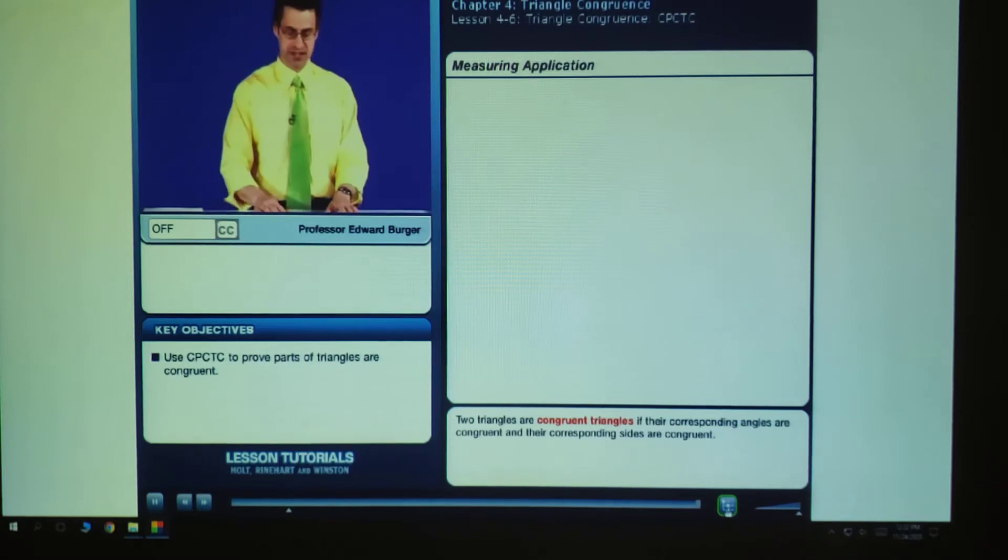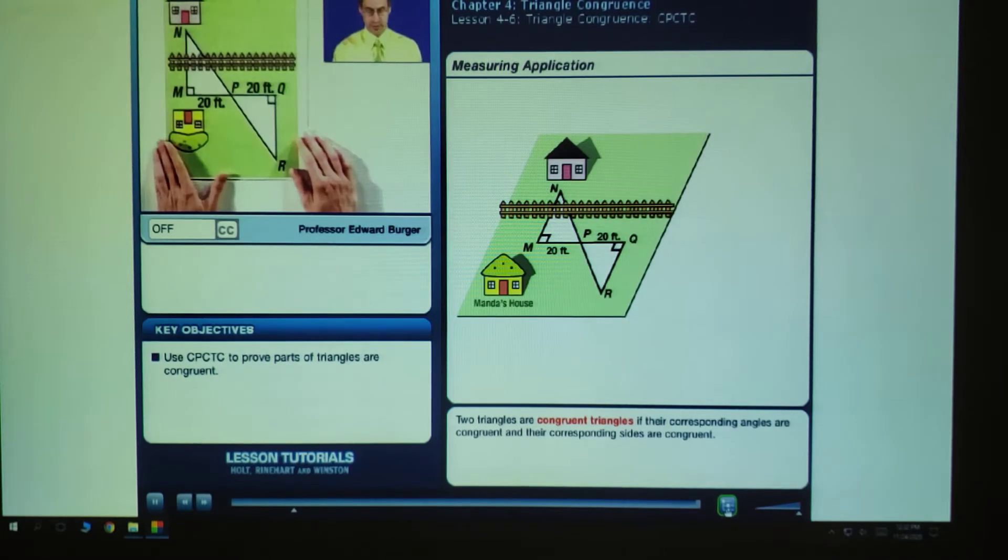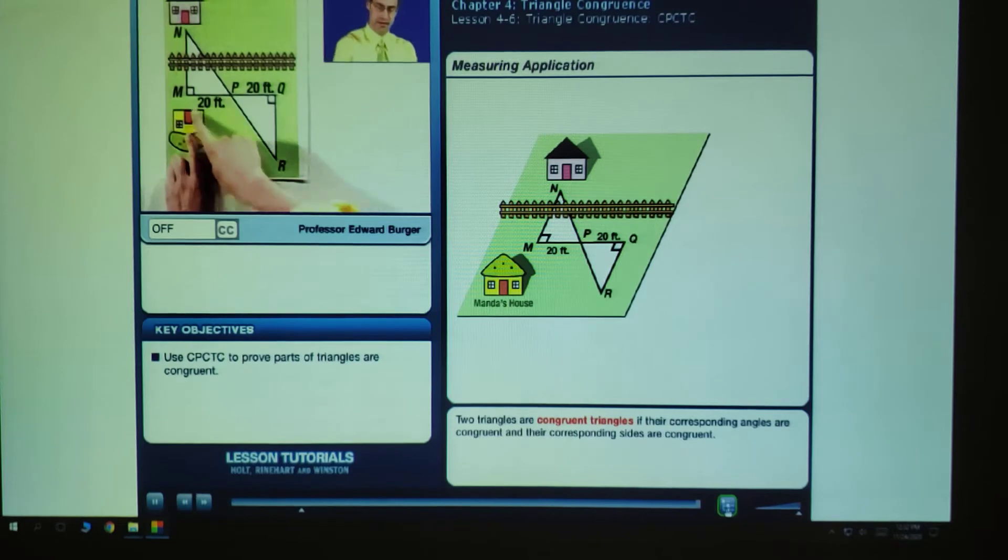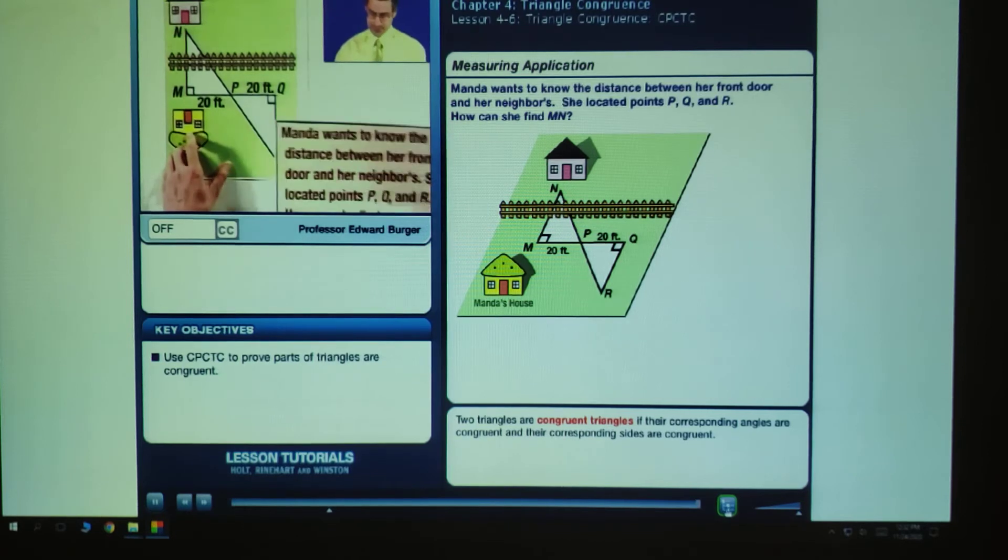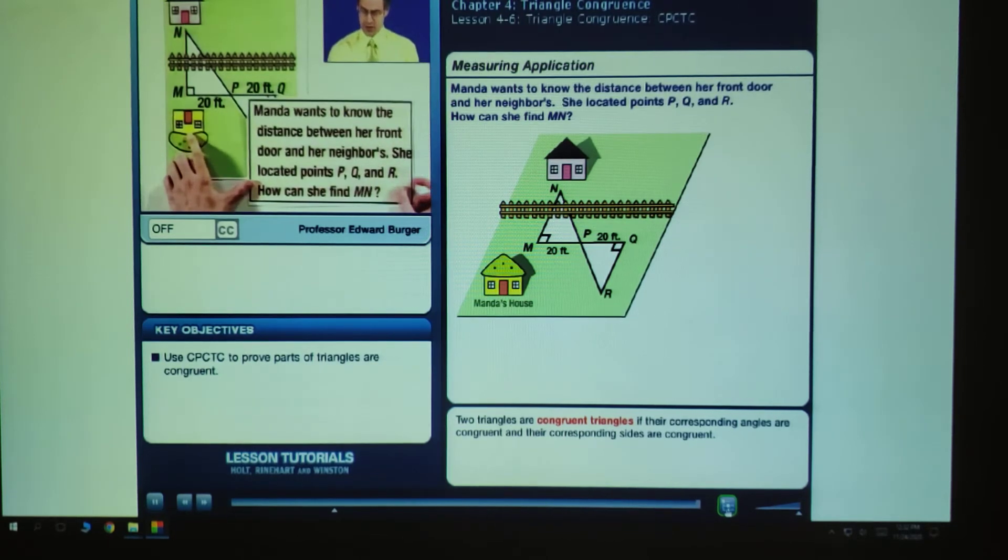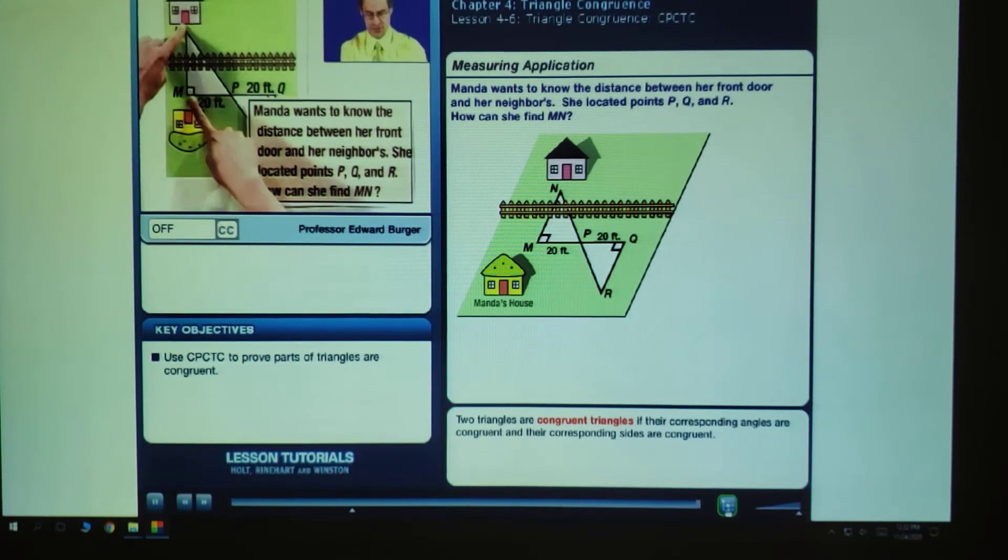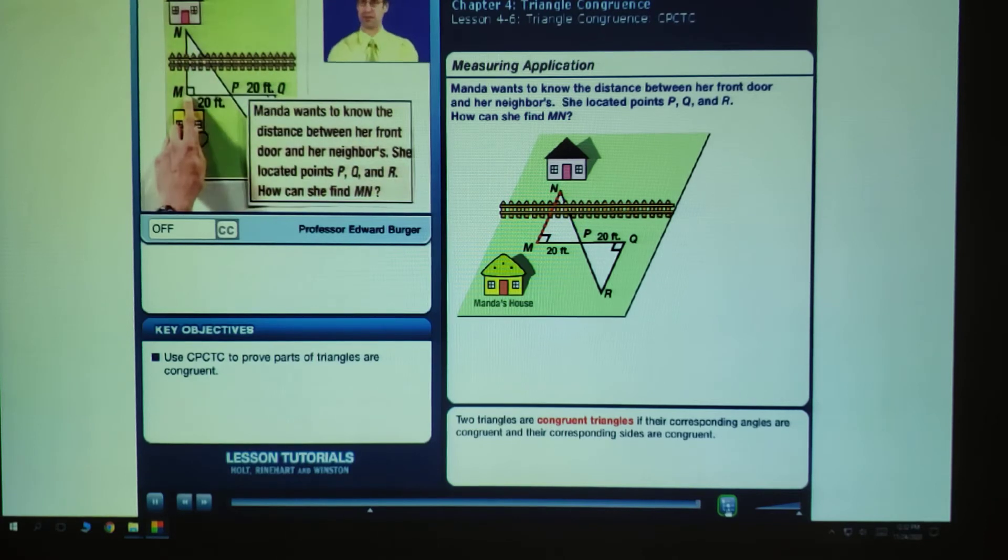So here is an interesting scenario. Here we have Manda's house and someone that lives sort of across the way from this fence. And this fence sort of goes on almost forever, so there's no way of crossing. Here's what Manda wants to know. She wants to know the distance between her front door, which is right here, and her neighbor's front door, which is right here. So she wants to find the length of the line segment MN. That is what she wants to figure out.